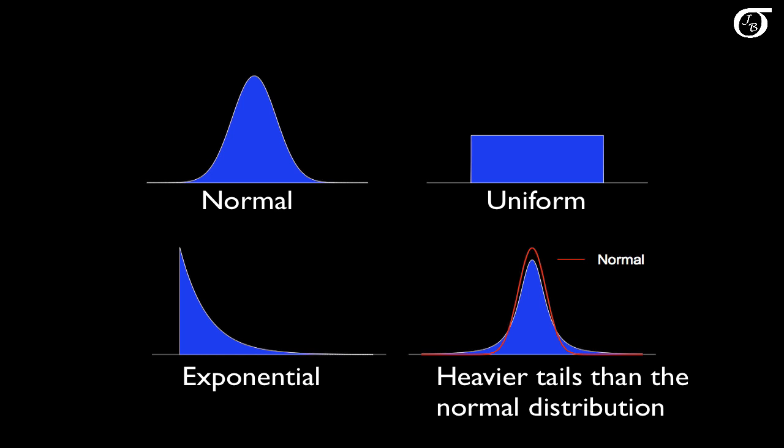Let's investigate the effect of a violation of the normality assumption on the t-test using simulation. Here I've plotted out four distributions. One of them is the normal distribution, so sampling from it perfectly justifies the normality assumption. The other three are definitely not normal, so sampling from them would violate the normality assumption of the t-test.